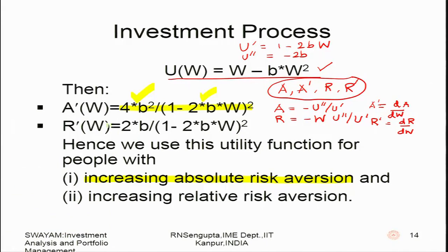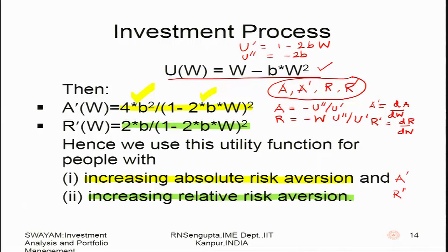When we compute R' for the quadratic utility function by substituting the values of A, R, A' and R' into the formula R(W) = −W·U''/U', the denominator is also positive and with b positive, R' > 0 as well. This confirms increasing relative risk aversion (IRRA) for the quadratic utility function.